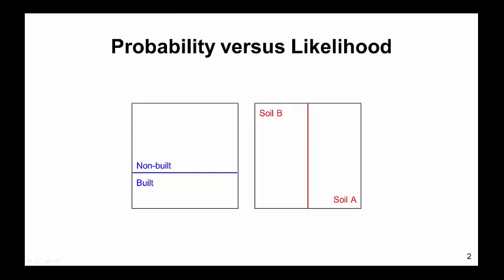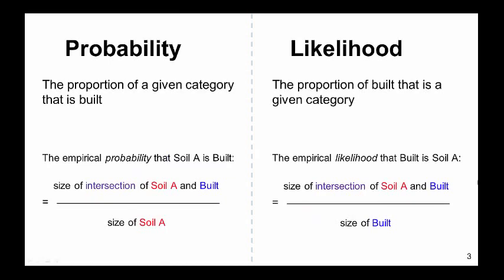The map on the left is divided into presence and absence of a feature — in this case built and non-built. The map on the right contains an explanatory categorical variable, in this case soil types A and B. Empirical probability and empirical likelihood are two measures of the association between the features in the left map and the categories on the right map. Probability computes the proportion of a given category that is built. The probability that soil A is built is calculated using the equation: size of intersection of soil A and built, divided by size of soil A.